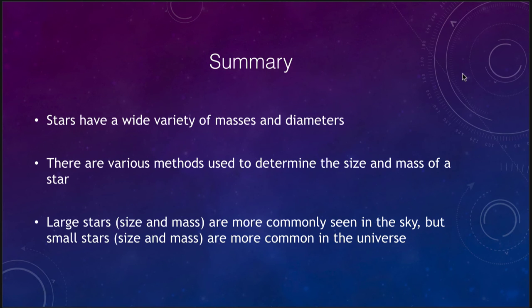Let's finish up here with our summary. We find that stars do have a wide variety of masses and sizes. They vary very widely from very small mass and small diameter stars to very large mass and large diameter stars. We've talked about some of the various methods that we can use to determine the sizes and the masses of stars. Typically what we see, the large stars, are more commonly seen in the sky—large size, large mass. But it is the small size and mass stars that are really more common in the universe. The difference is we can see these stars from very large distances, whereas the small stars can be hard to find even if they are close to us. That concludes our lecture on determining sizes and masses of stars.